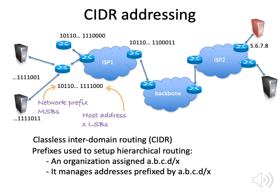An address is given in CIDR as a dotted quad a.b.c.d followed by a number x, which indicates how many bits identify the network itself, and everything other than the network bits refer to the host. So if you have a slash 24 such as 192.168.0.0/24, this means that 24 bits — 192.168.0 — refer to the network, and 8 bits, the final 8 bits, refer to the host. This allows you to have 256 different hosts. So if you are an organization that manages some set of addresses identified by a CIDR address, you manage all the addresses prefixed by that many bits.